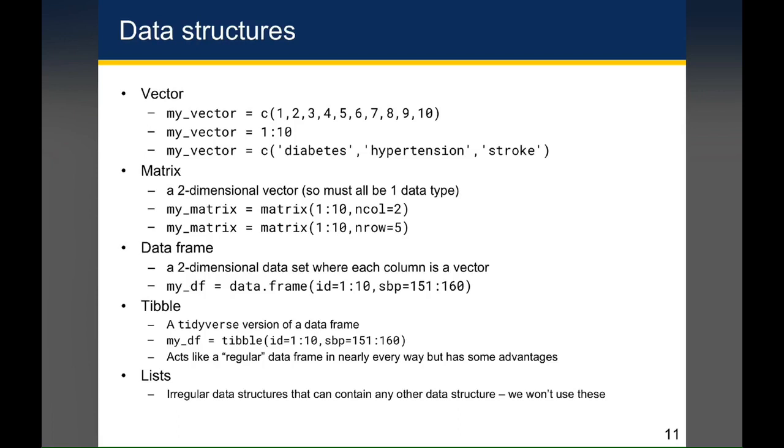A data frame is a two-dimensional data set where each column is a vector. And so if you wanted to generate a data frame from scratch called my_df, you could use this function data.frame, id equals 1 through 10, sbp standing for systolic blood pressure equals 151 to 160. And what this would effectively do is generate a data frame with 10 rows and two columns, where the column names are id and sbp, and the row values are specified as 1 through 10 for id, and 151 counting by 1 up to 160 for systolic blood pressure.